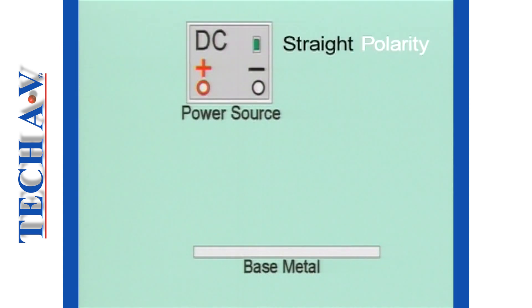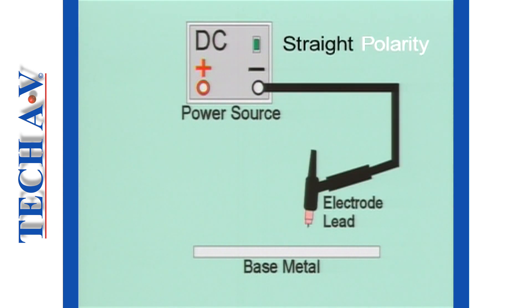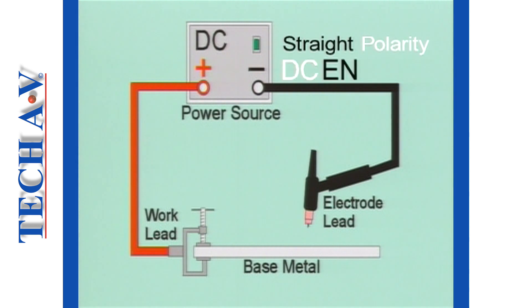Straight polarity means that the electrode is connected to the negative connection of the power source. The base metal is connected to the positive connection. This configuration is also known as DCEN, meaning Direct Current Electrode Negative.